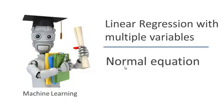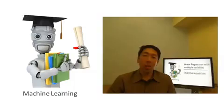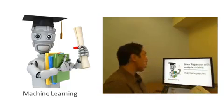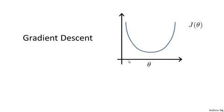In this video, we'll talk about the normal equation, which for some linear regression problems will give us a much better way to solve for the optimal value of the parameters theta. The algorithm we've been using for linear regression is gradient descent, where in order to minimize the cost function J of theta, we take this iterative algorithm that requires multiple iterations to converge to the global minimum.